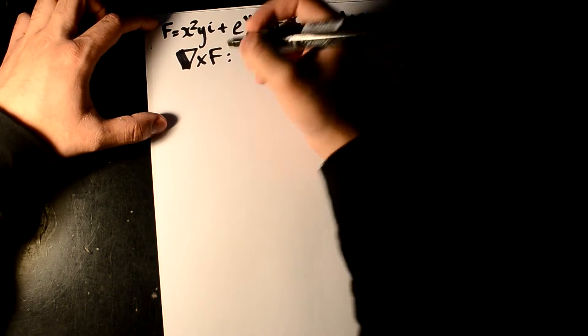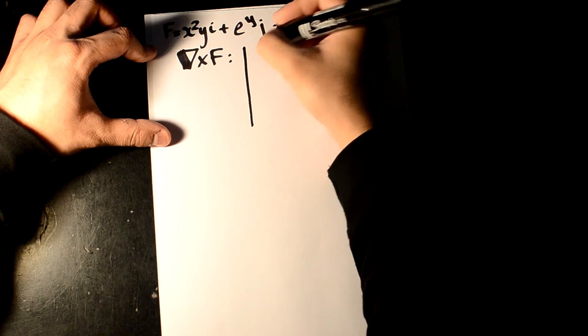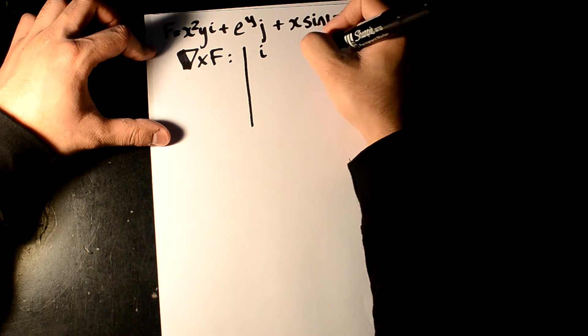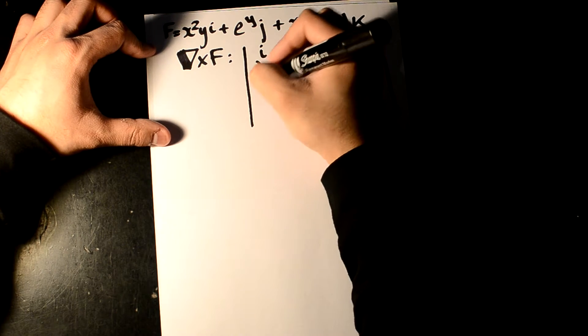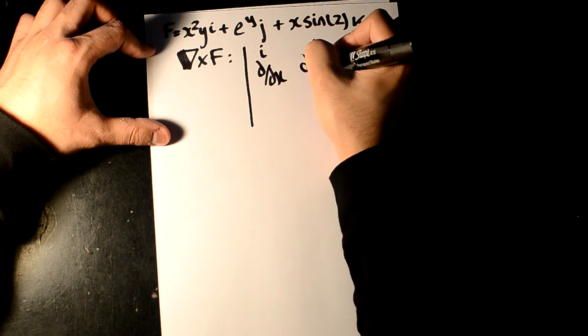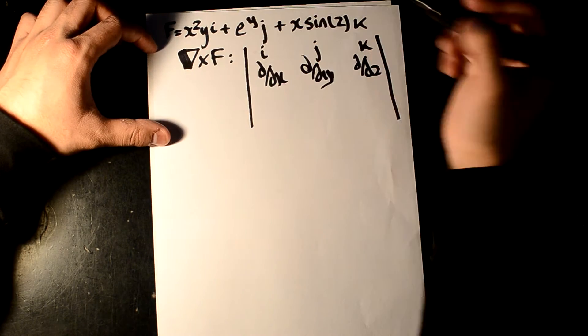So to begin with, we remember that the way you write this is i, j, and k, and then it's d over dx, d over dy, and d over dz, which is your nabla.